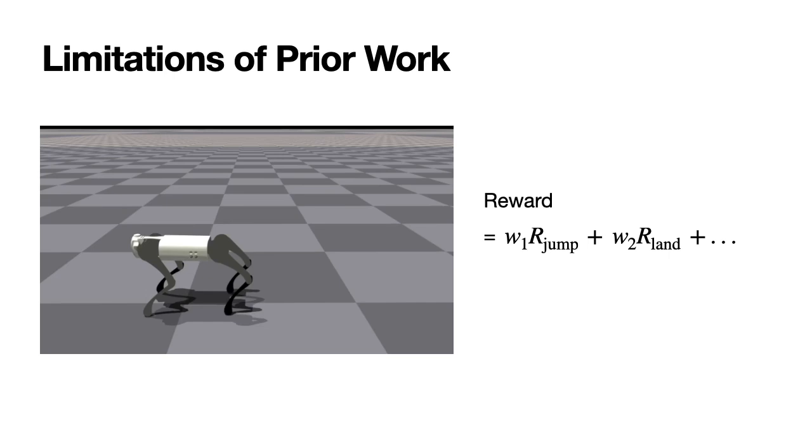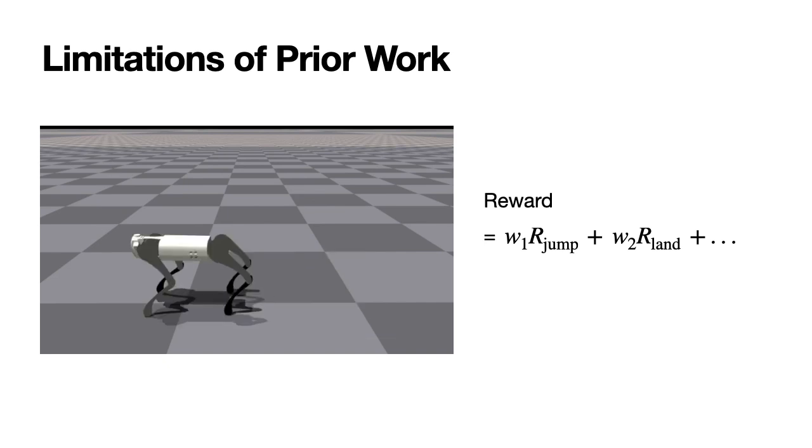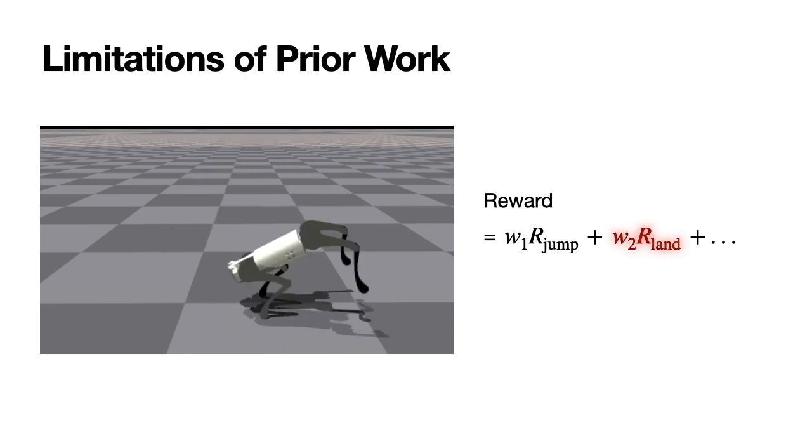For complex tasks that involve sequential movements, such as a backflip, the reward shaping process becomes even more challenging. Taking a backflip as an example, this task requires focusing on jumping at the start of the episode, and then on landing after the jump. Consequently, the weight of reward terms related to jumping and landing needs to be adjusted dynamically, further complicating the reward shaping process.